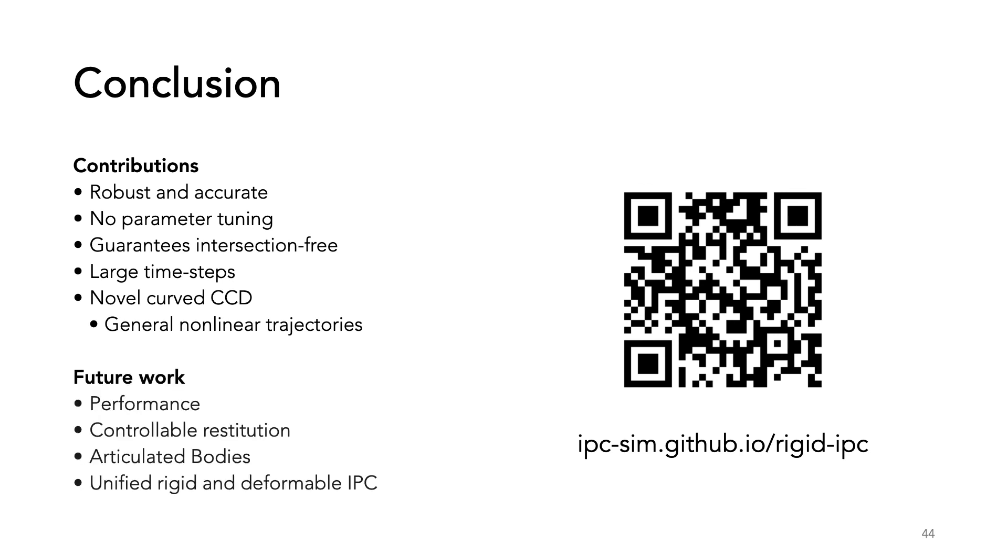In the future, it will be important to look at performance to match the expected speed of other methods. While our method can exhibit restituted behaviors due to the barrier potential, it is largely uncontrolled and dependent on the time integrator. Controlling restitution is an important piece to work on in the future. Adding support for articulated bodies presents a nice avenue for improved performance and are useful for applications in robotics.